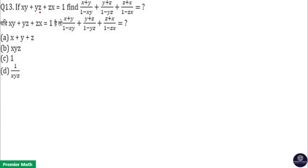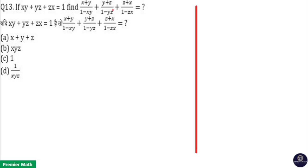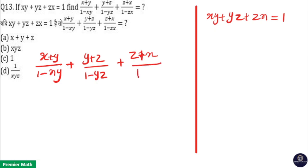If xy + yz + zx = 1, find (x + y)/(1 - xy) + (y + z)/(1 - yz) + (z + x)/(1 - zx). Given that xy + yz + zx = 1, we have to find out (x + y)/(1 - xy) + (y + z)/(1 - yz) + (z + x)/(1 - zx).